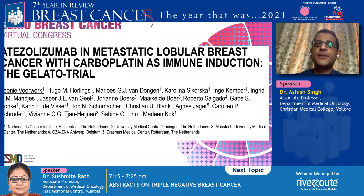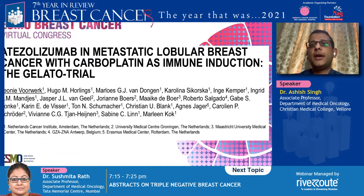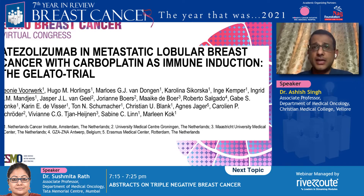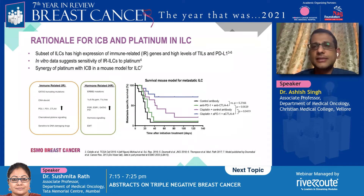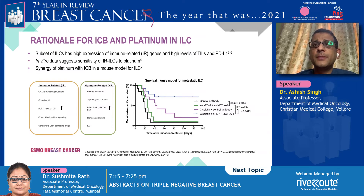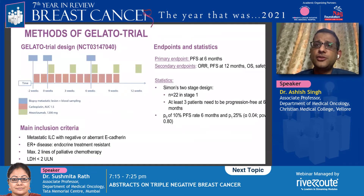Switching gears now to advanced disease — the second abstract is in metastatic lobular breast cancer. This was a small single-arm phase 2 Simon two-stage design study where authors studied giving carboplatin as immune induction along with immunotherapy, specifically atezolizumab. The rationale for combining carboplatin in luminal breast cancer was that some luminal breast cancers have increased expression of immune-related genes, and it has been shown that platinum increases sensitivity to immunotherapy in those cancers — confirmed in mouse models. This is the first in-human study in this setting.